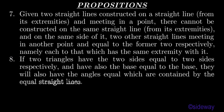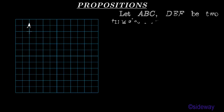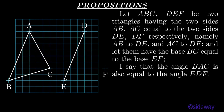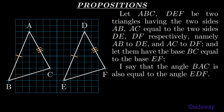Proposition 8. If two triangles have the two sides equal to two sides respectively, and have also the base equal to the base, they will also have the angles equal which are contained by the equal straight lines. Let ABC, DEF be two triangles having the two sides AB, AC equal to the two sides DE, DF respectively, namely AB to DE and AC to DF, and let them have the base BC equal to the base EF. I say that the angle BAC is also equal to the angle EDF.